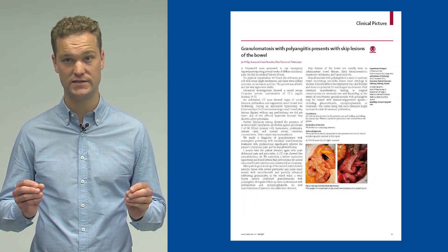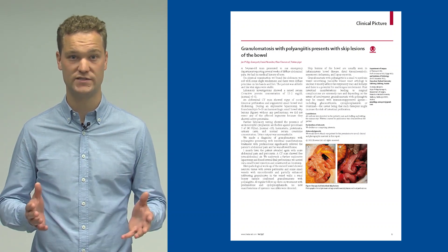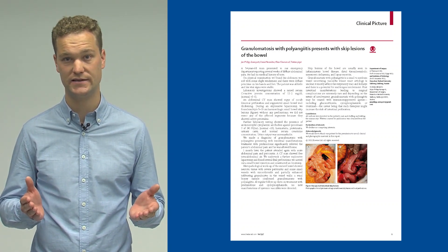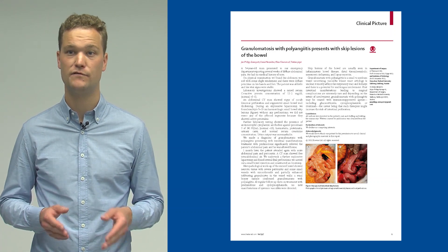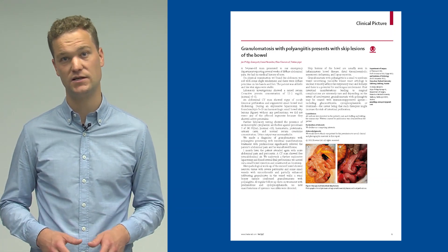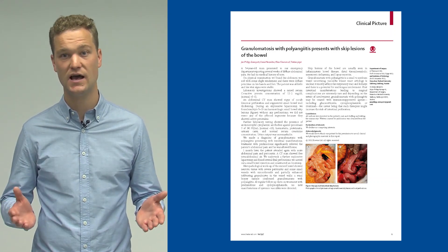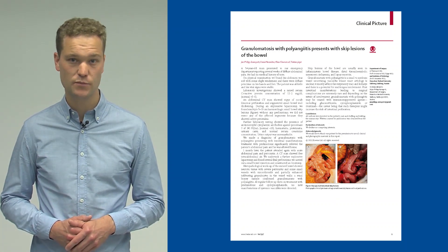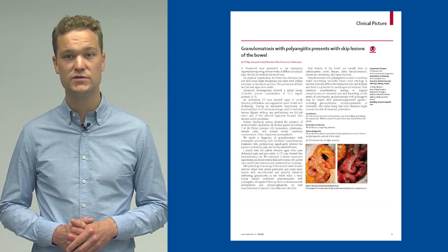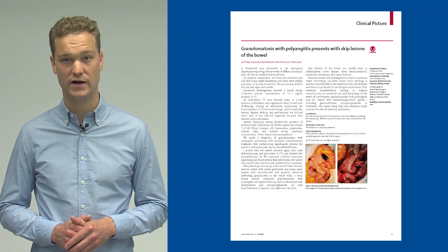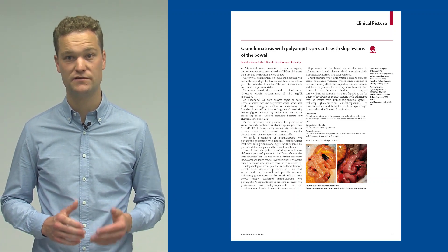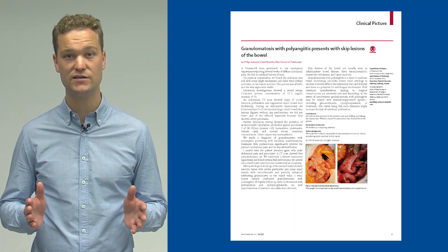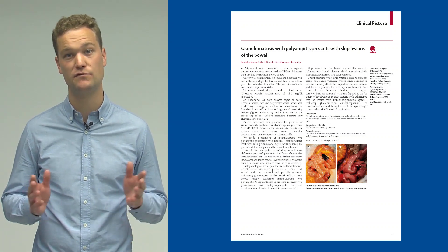Granulomatosis with polyangiitis is a necrotizing vasculitis which mostly affects the respiratory tract and kidneys. Intestinal manifestations leading to surgical complications are extremely rare. Granulomatosis with polyangiitis may be treated with glucocorticoids and other immunosuppressive agents. Such therapies might increase the risk of intestinal perforation.